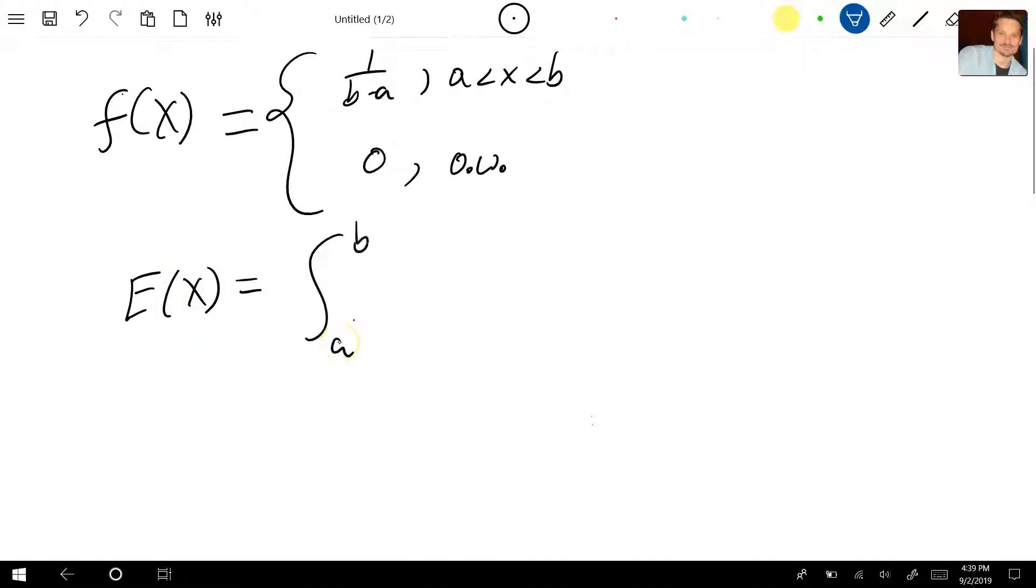So you integrate from a to b. I just want to be clear that these are the same limits—this b corresponds to this b, and this a corresponds to this a, the same limits. Then you take x and you multiply by the pdf, so it's multiplied by 1 over b minus a, and then this is the dx.